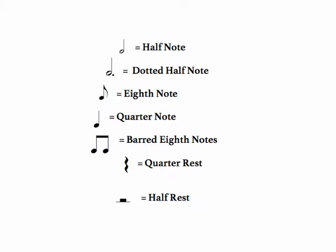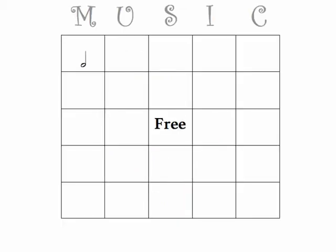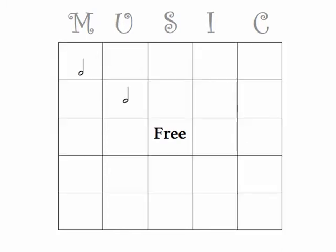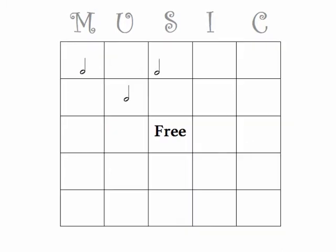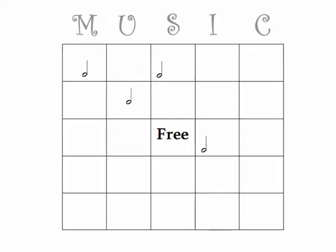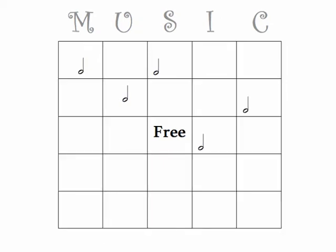So you pick a note. In this instance, let's take the half note. You're going to put it in the M column, then you're going to take the half note and put it in the U column, S column, I column, and C column.